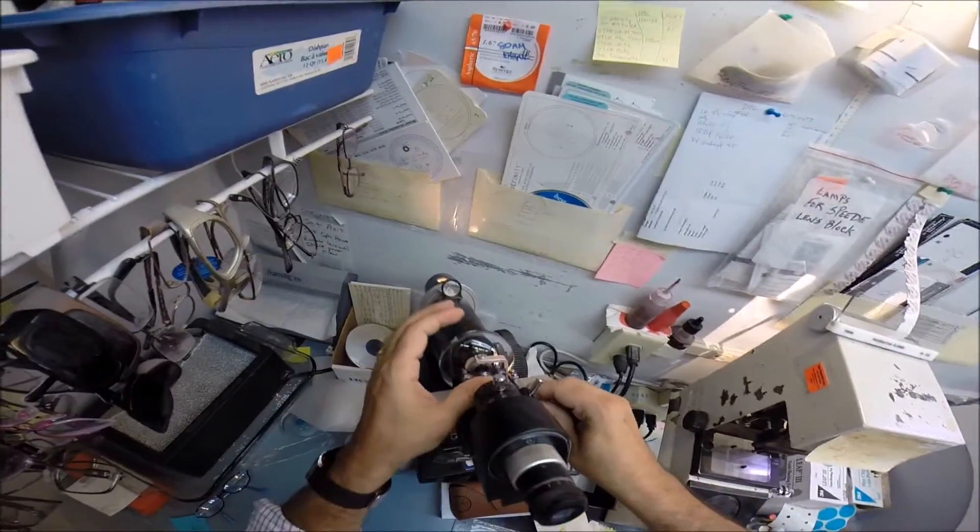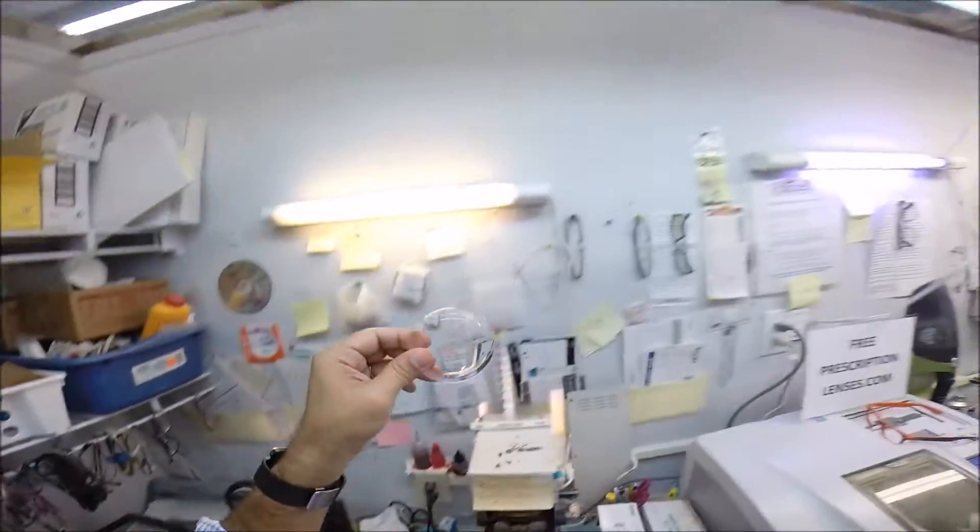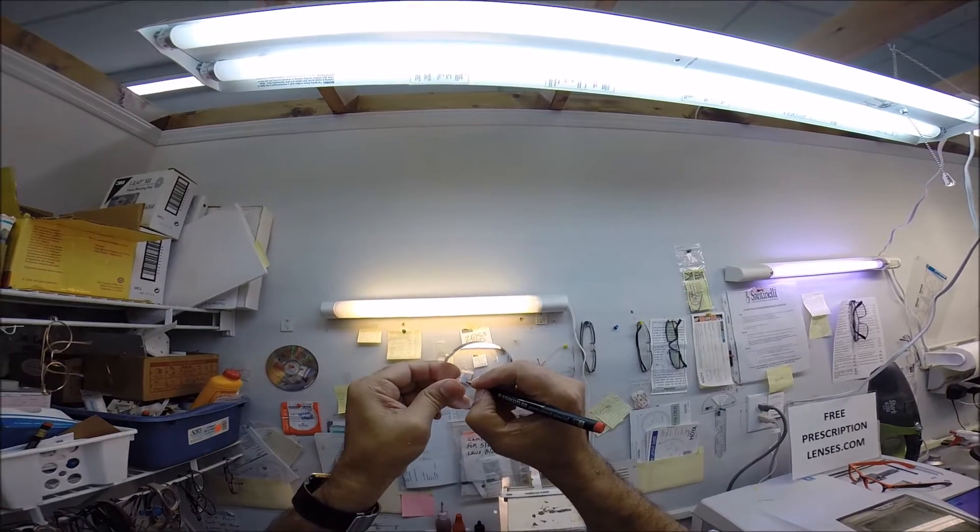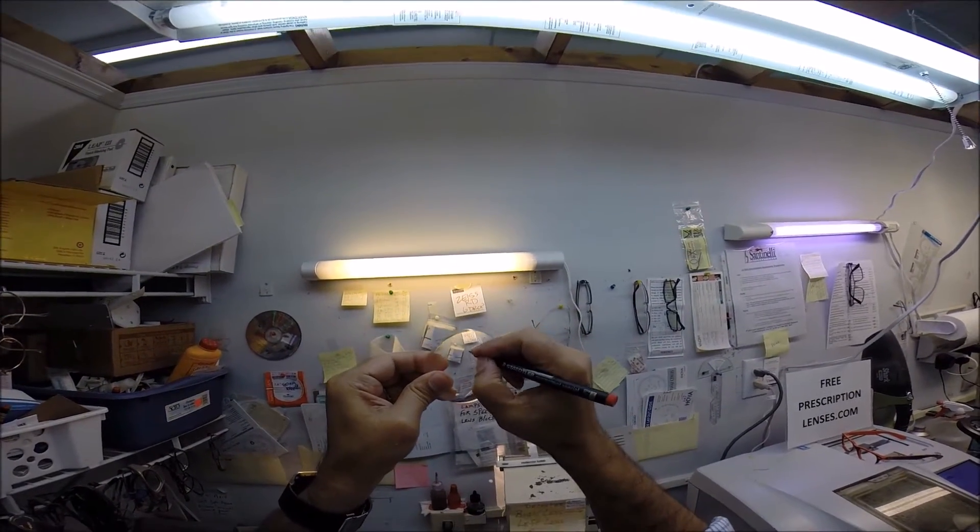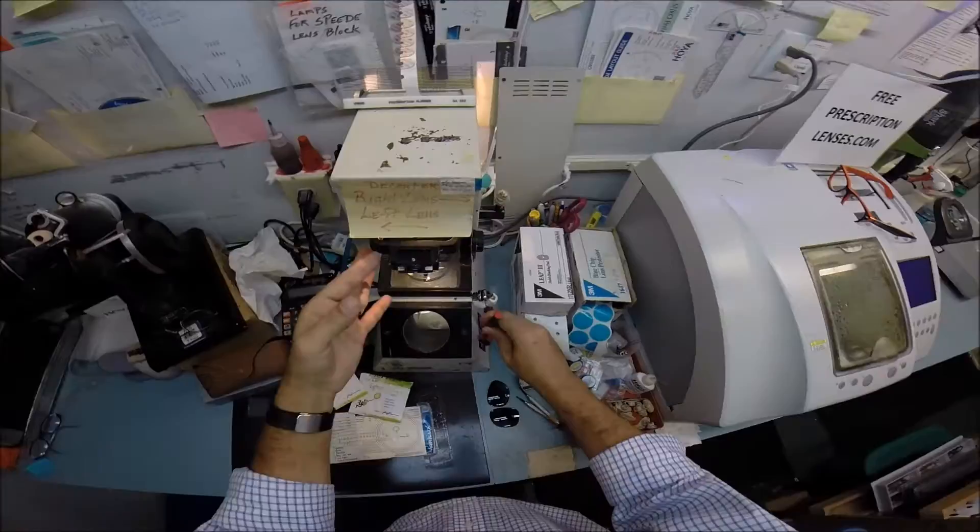It just means you squint. Alright, so I've got three dots on your lenses that you can't see, so I'm going to darken them for you. And this is the right lens, so I'm going to put an R there.